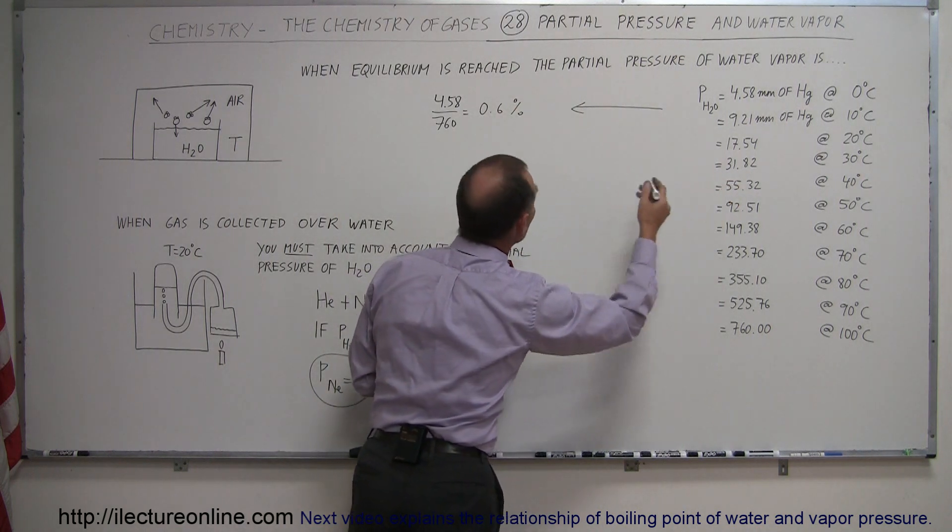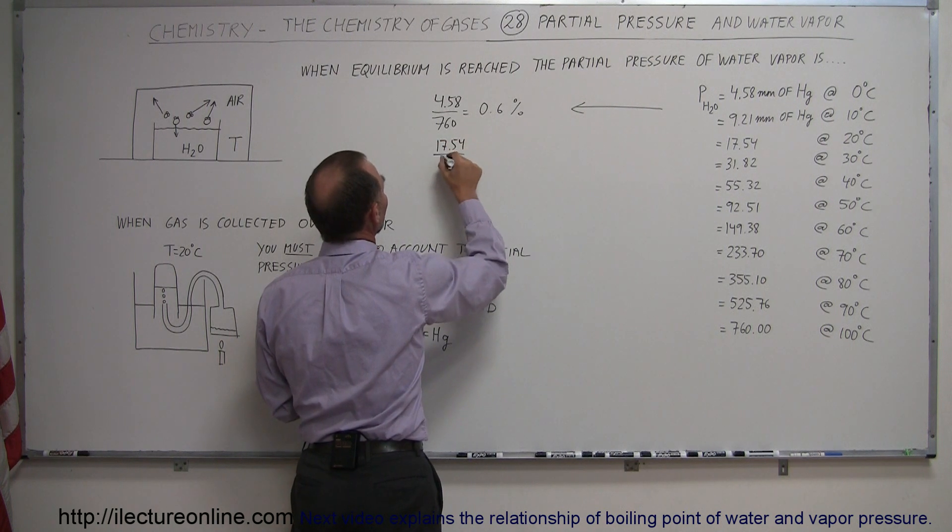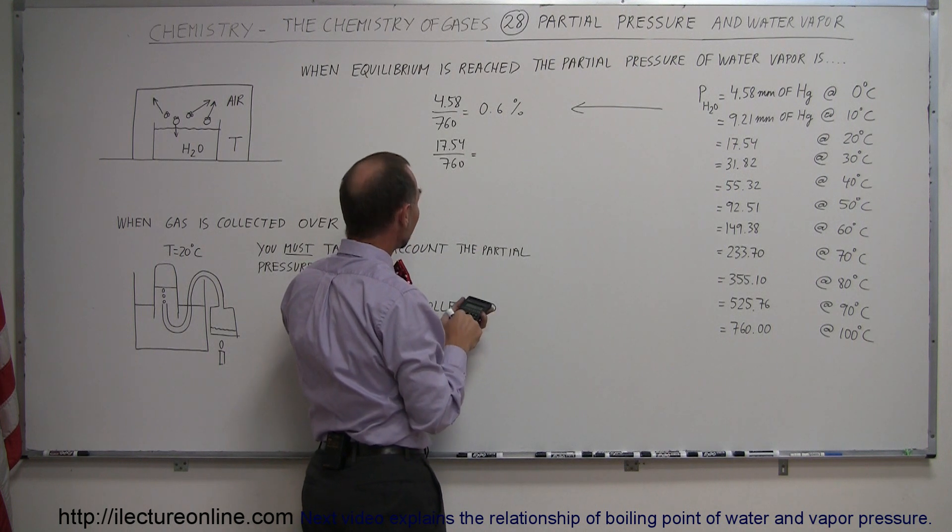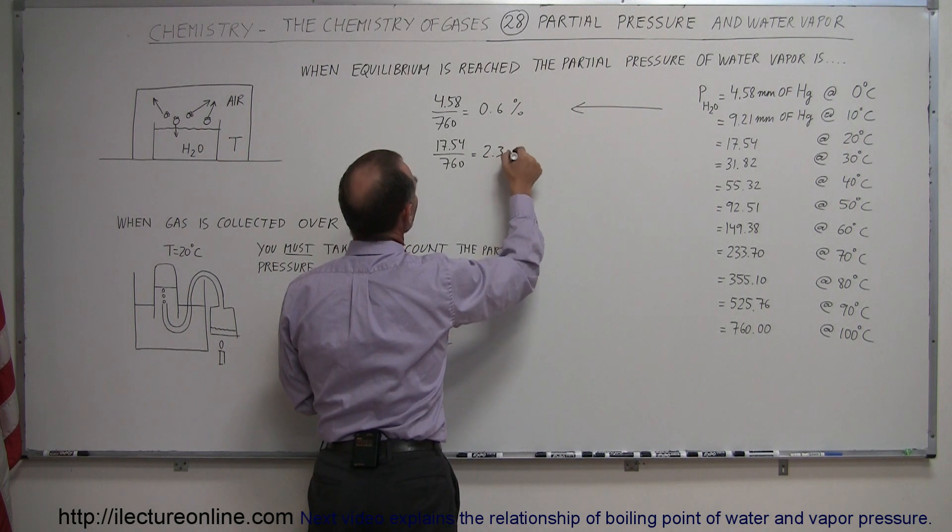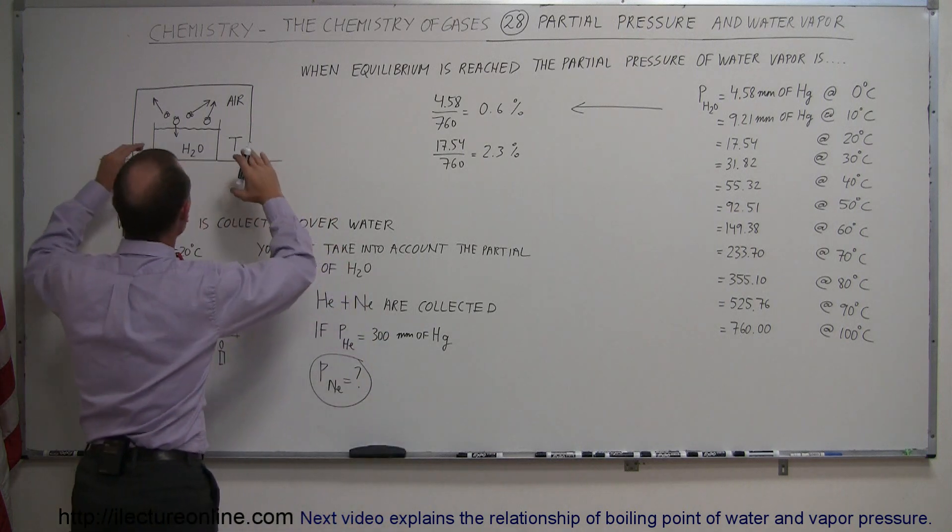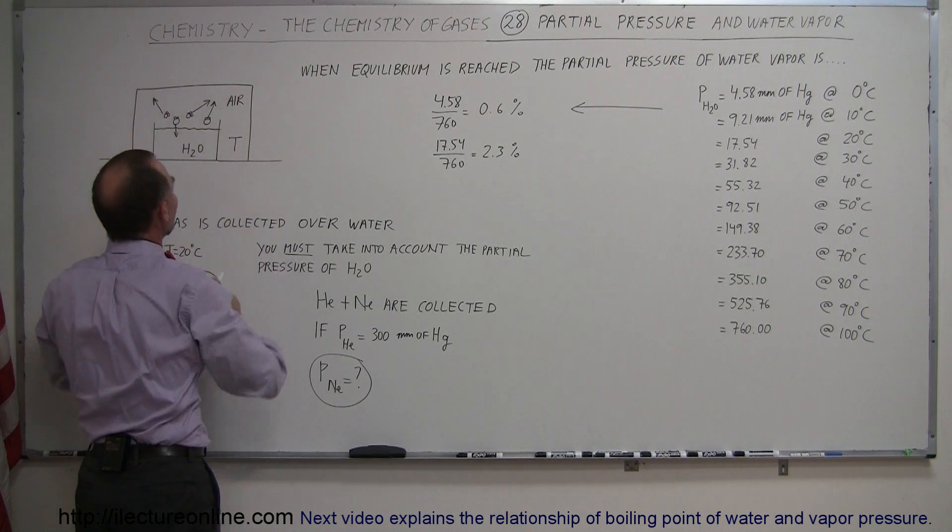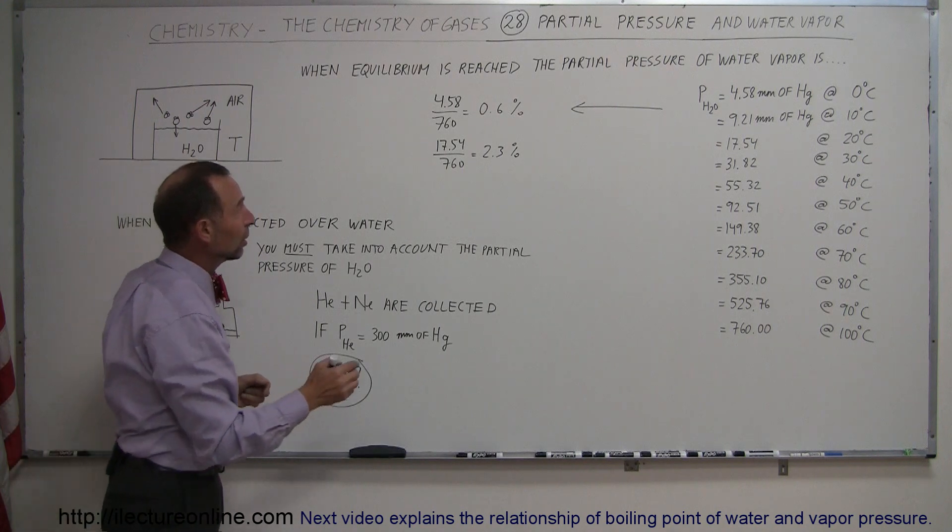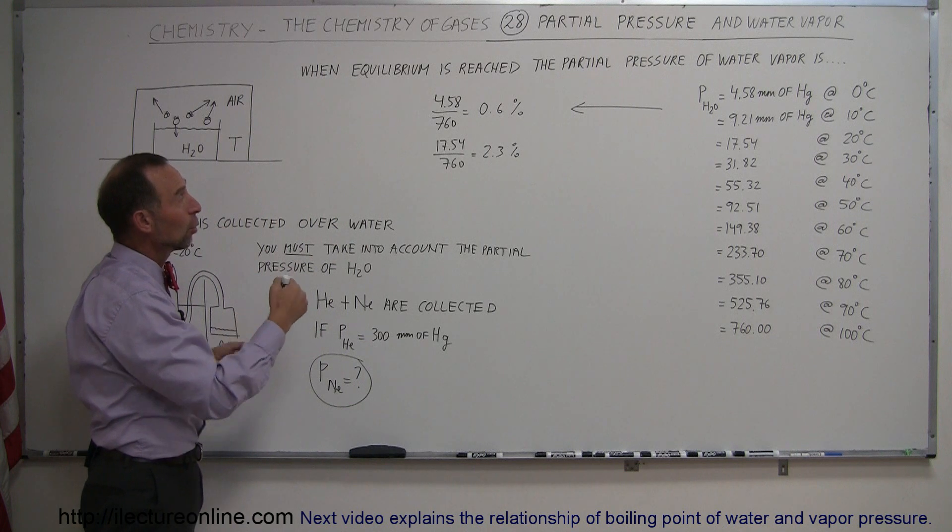At let's say 20 degrees centigrade, we have a partial pressure of 17.54 divided by 760, which equals 2.3%. So at 20 degrees centigrade in a situation like this where water is allowed to evaporate into an enclosed environment like that, it will continue doing that until the air is fully saturated. Water at 20 degrees centigrade means that 2.3% by pressure or by volume would be water vapor.